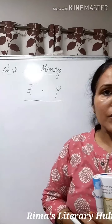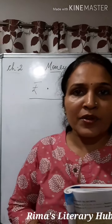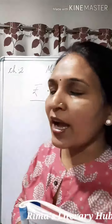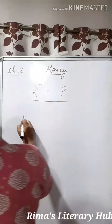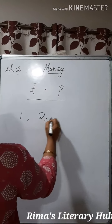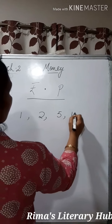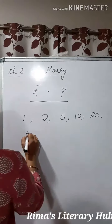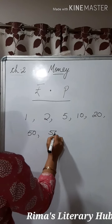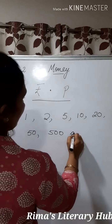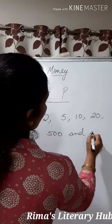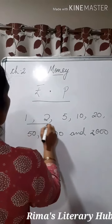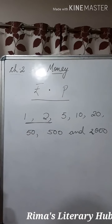Now the denominations — you had already done this in the previous class, let's revise once. In Indian notes, we have denominations of 1, 2, 5, 10, 20, 50, 500, and 2000. Though these two are not so much in circulation.